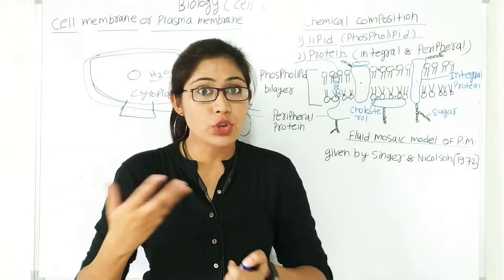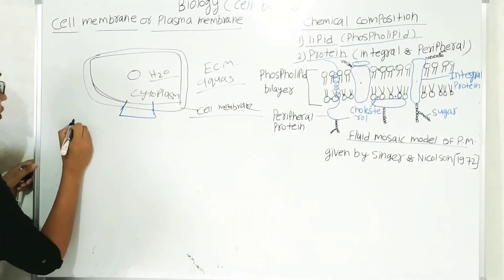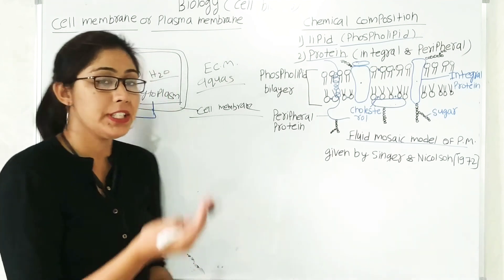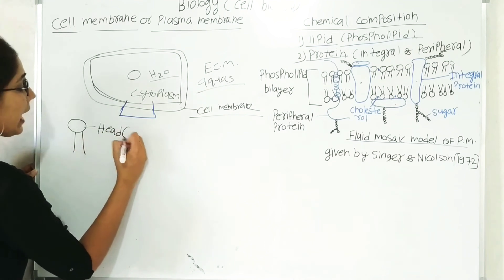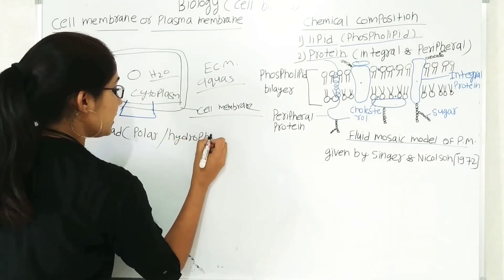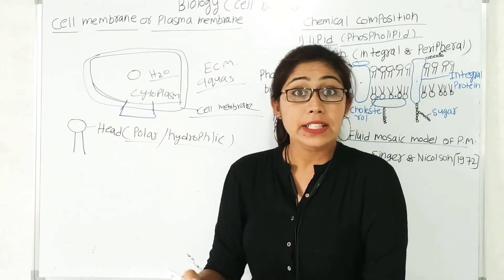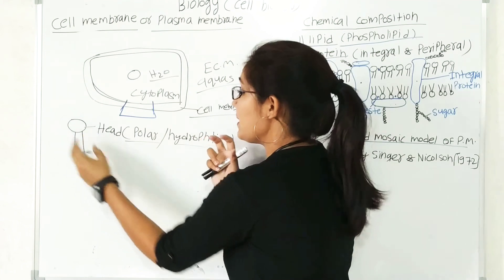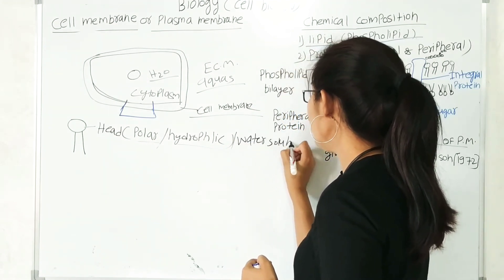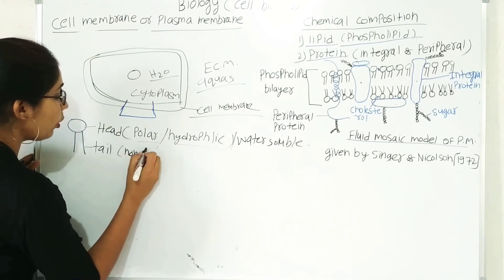Let's talk in detail about the phospholipid molecule and its exact structure. The phospholipid molecule is made up of two main components. The first is the head part of the phospholipid — that head part is made up of a polar component, or you can say it is a hydrophilic compartment. Hydrophilic means it is a water-soluble component. The second component is the tail part, which is non-polar in nature.